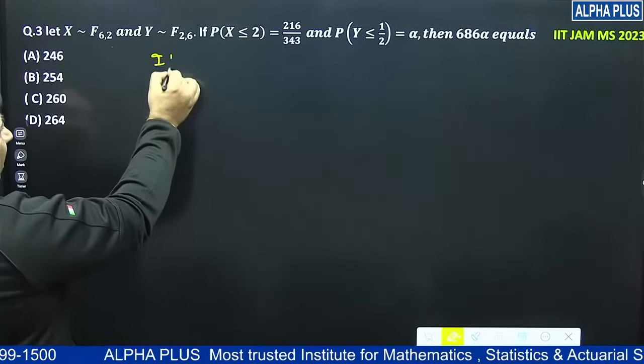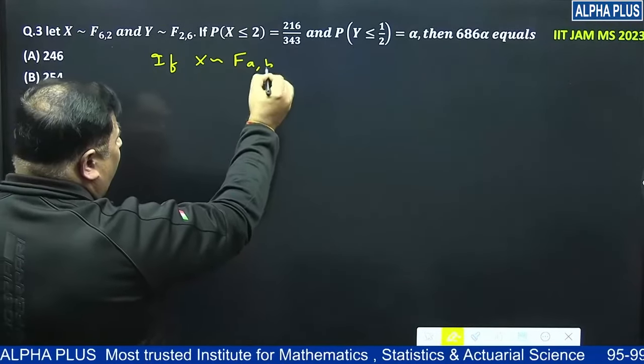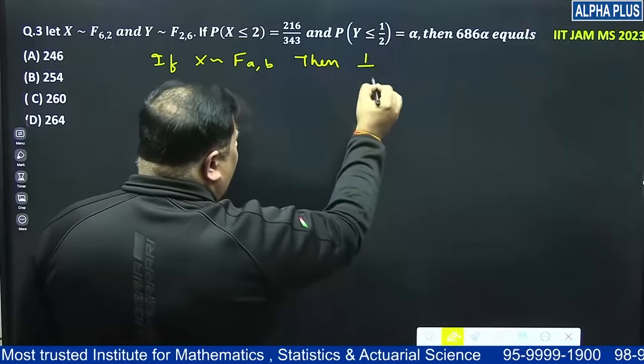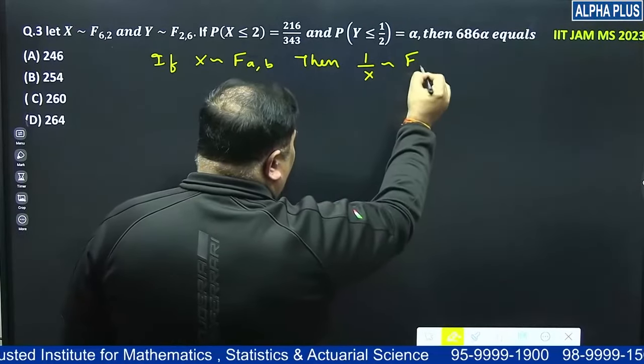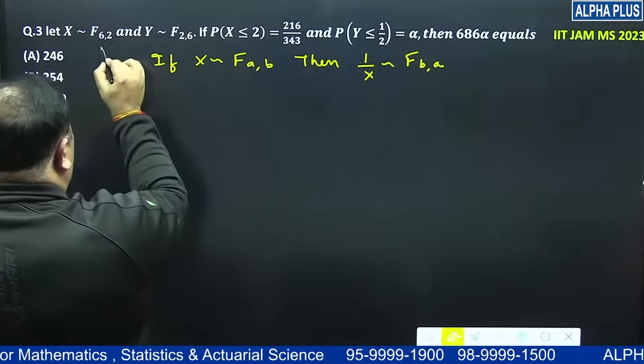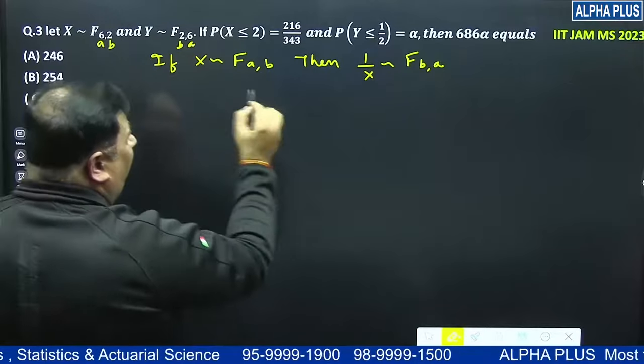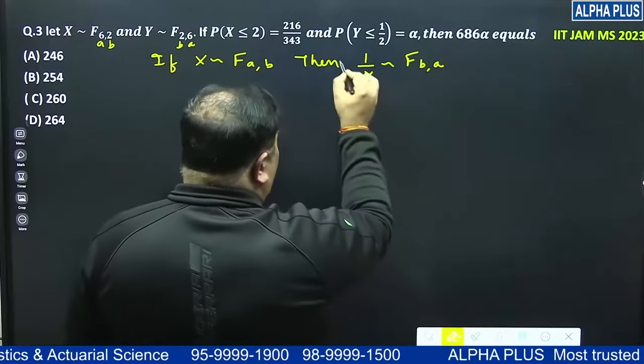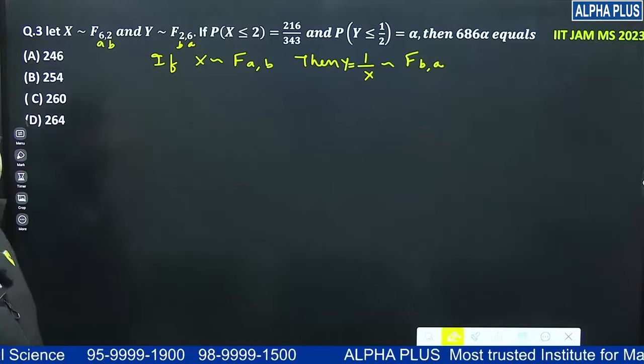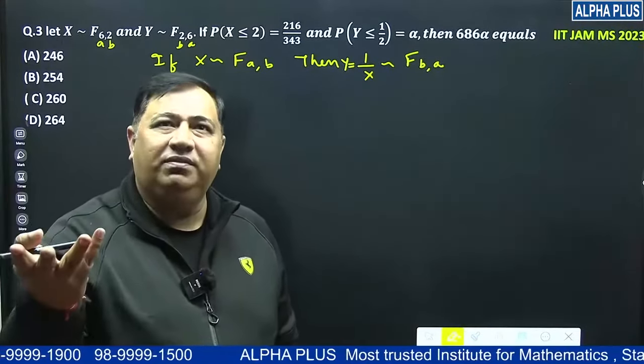If students, if you know that X follows FAB, then 1 by X follows FBA. So it clearly becomes FBA. The A and B were swapped actually. So it becomes BA, which means Y. This means you should understand Y is same as 1 by X. Students, this should be very clear to you that Y is 1 by X. The question is then done. Nothing remains.